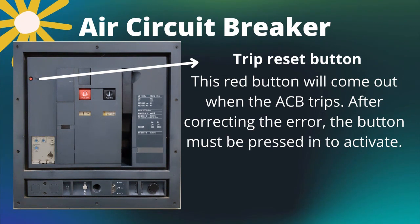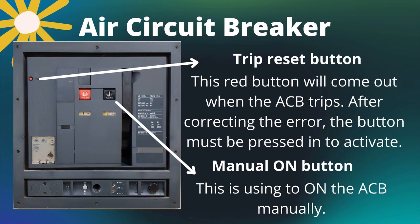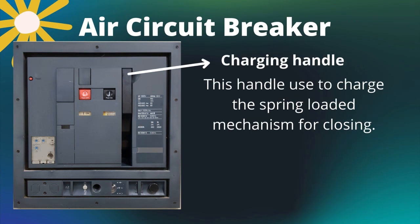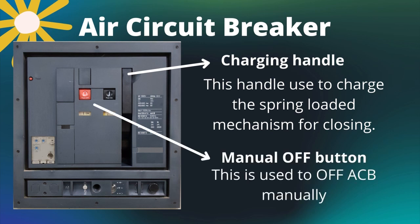Knowing the ACB in detail: the trip reset button is a red button that comes out when the ACB trips; after correcting the error, the button must be pressed in to reactivate. The manual on push button is used to switch the ACB on manually. The charging handle is used to operate the spring-loaded mechanism for closing the contacts. The manual off push button is used to switch the ACB off manually.